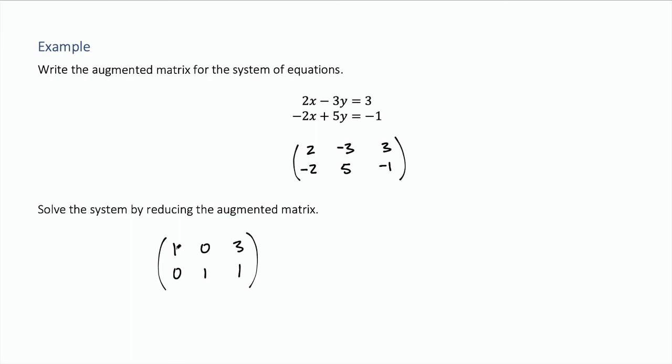When you've got it in this form, notice that if we go backwards from this matrix to equation form, you'd end up with 1x plus 0y equals 3, and 0x plus 1y equals 1. Of course, 0y is just 0, so the first one is just x equals 3.